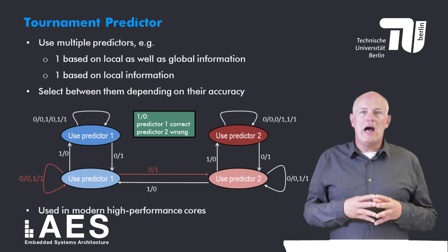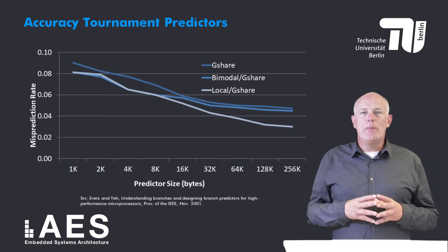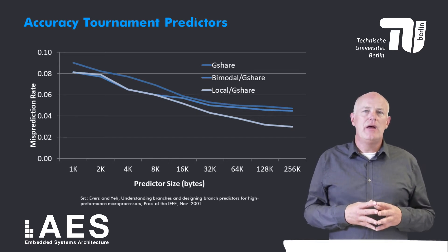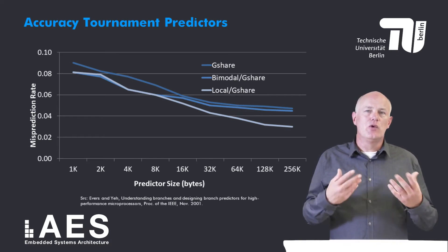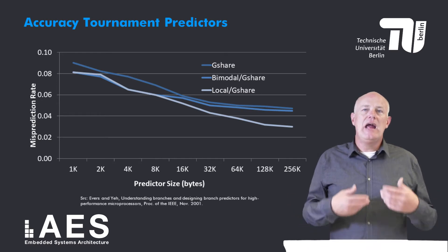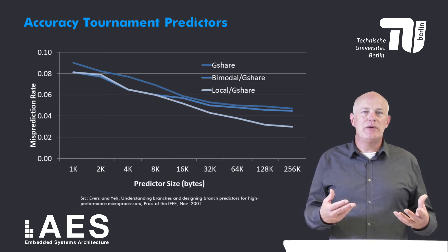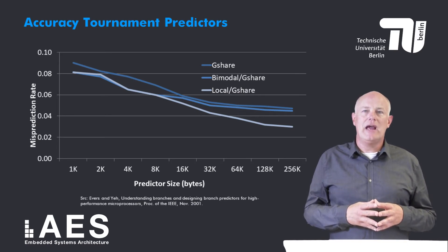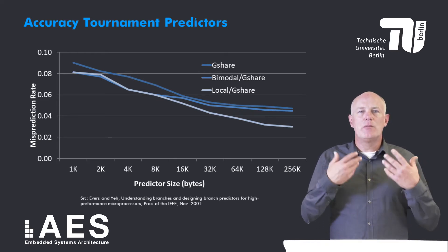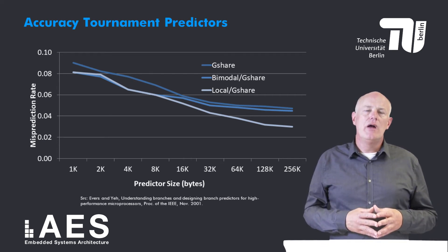Virtually all modern high-performance cores employ such advanced tournament branch predictors. This figure compares the accuracy of two tournament predictors and G-share. The blue line is the misprediction rate of G-share, the red line is a tournament predictor based on the bimodal predictor and G-share, and the green line corresponds to a tournament predictor based on the local history branch predictor and G-share. For exact table sizes I refer you to the papers of Avers and Yeh. The local/G-share tournament predictor performs substantially better than G-share alone and also better than the bimodal/G-share tournament predictor.